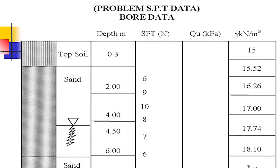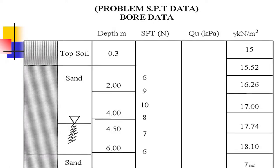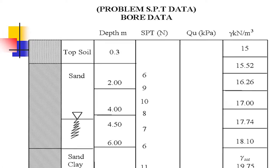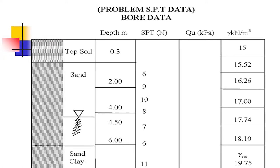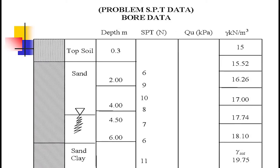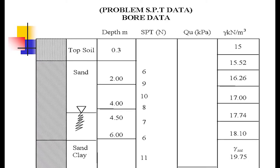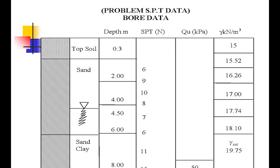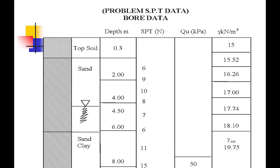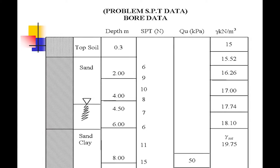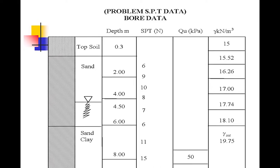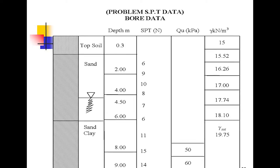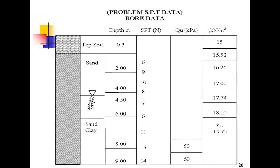A borehole chart is prepared showing the top soil description, sand, sandy clays, and water table location. Depth is noted along with the depth at which soil changes occur and at which the SPT test has been conducted. The unconfined compressive strength (qu) is found from the collected sample and reported in a separate column. The unit weight (γ) is also calculated.